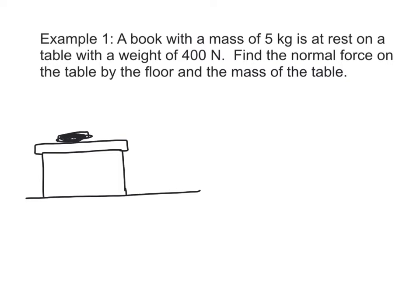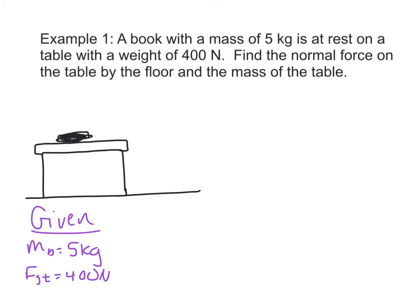It's a word problem so we want to list our given and our find. Given: the book — mass of the book — has a mass of 5 kg. The table has a weight of 400 N. Remember that mass and weight are not the same thing; weight is the force of gravity, measured in newtons. So Fg for the table is 400 N. We're looking for the normal force on the table, FNT, and the mass of the table.